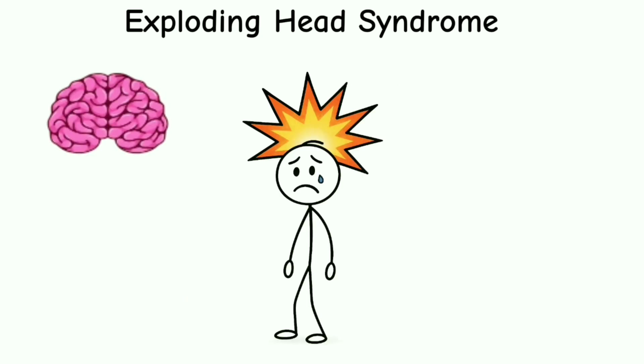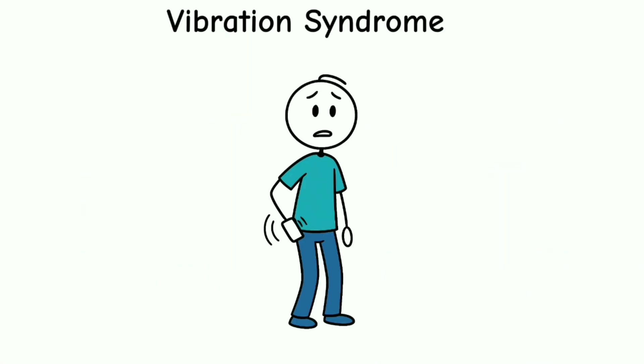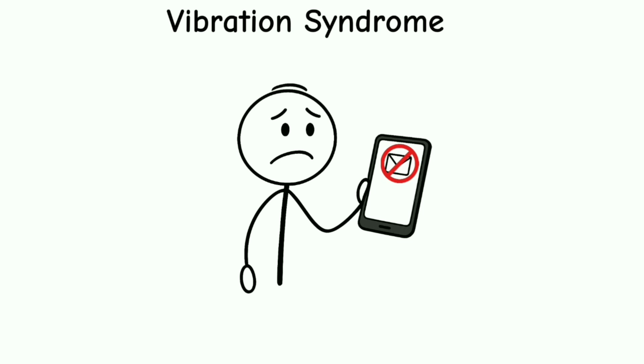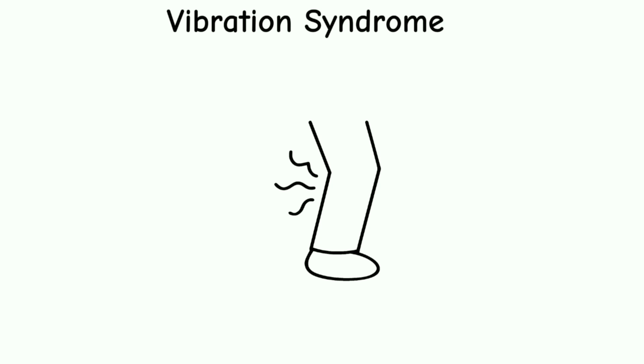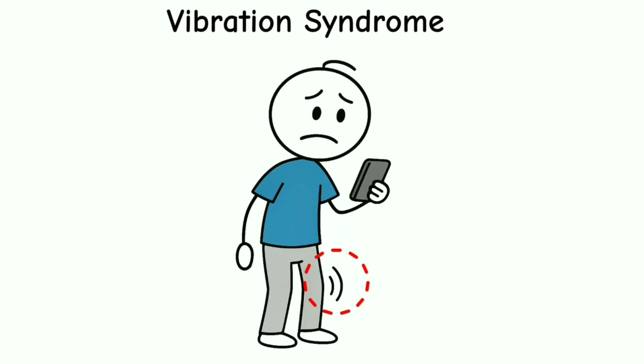Vibration syndrome: you felt your phone vibrate. You check—no notifications. This is your brain misreading signals. Muscle twitches, clothing movement, and deciding that was probably a message. It's your body sending fake pings like it's trying to stay relevant.